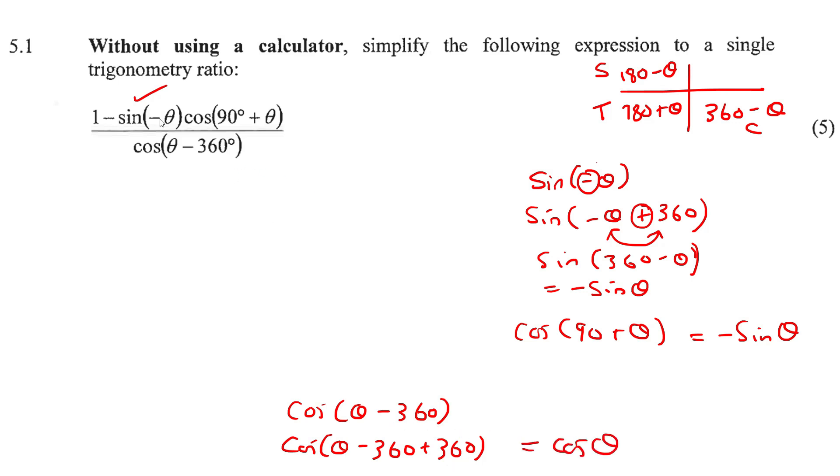Okay, so how would you do this in an exam? So you would just go one minus sin. You would add 360. Here you would just change it to, sorry, this one was a negative sin theta. Okay, and then this you would just add 360.